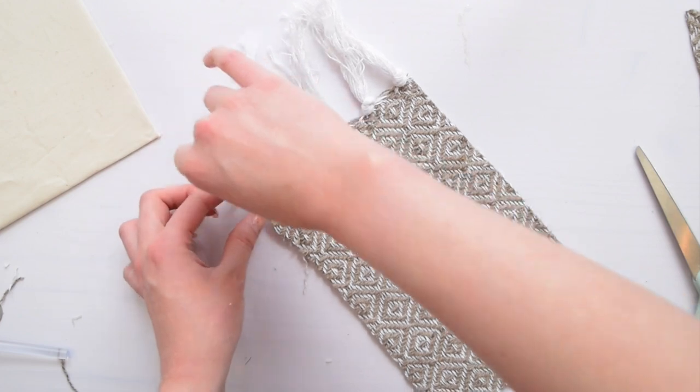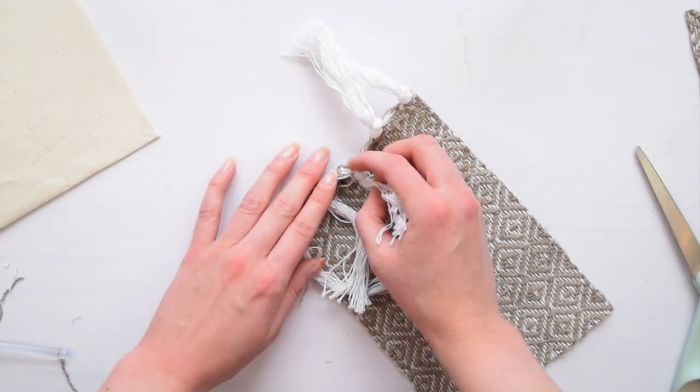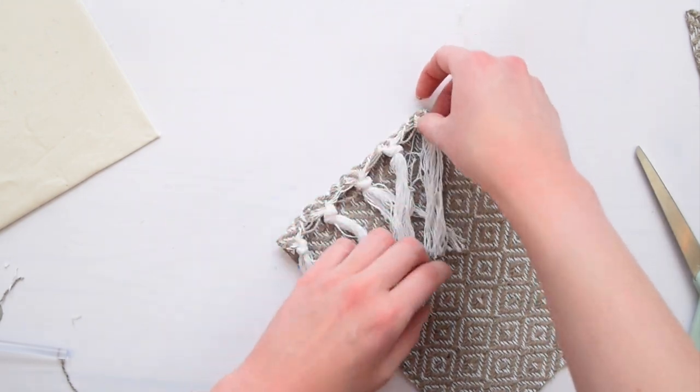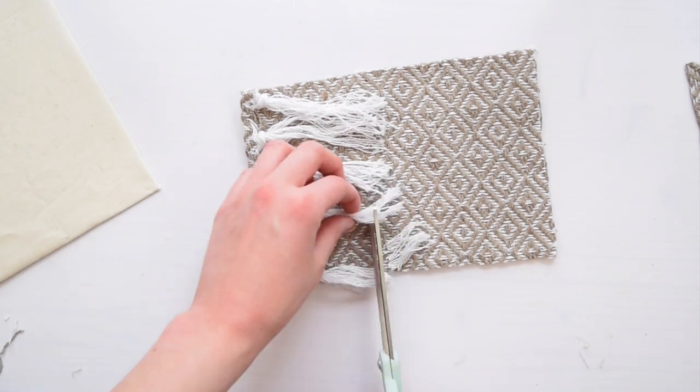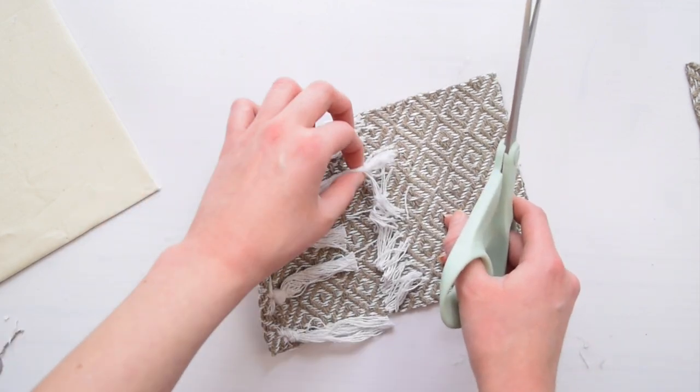So I decided to use some hot glue across the top and then fold the tassels over so they look like they're just kind of effortlessly laying on top of this scrap of fabric. I also decided to give the tassels a trim just because I thought they looked a little long.